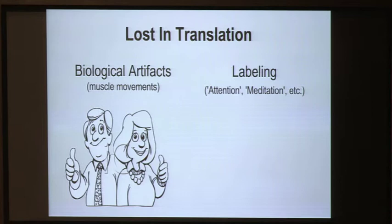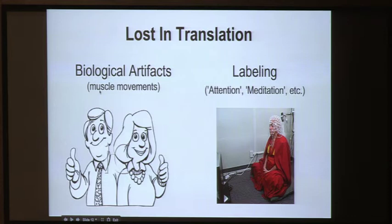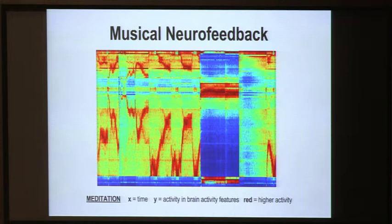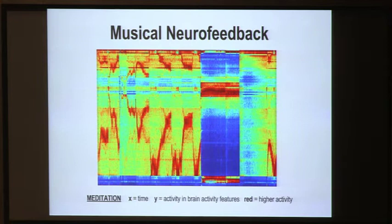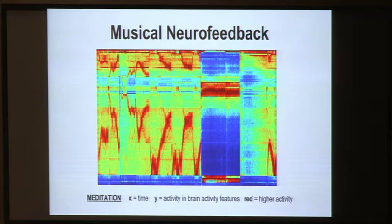Musical neurofeedback is a great use for this technology. Here you can see how the music reacts to what you're doing — this is a very experienced meditator. The x-axis represents time and each line on the y-axis represents a different brain activity feature. You can clearly tell when the person is meditating or going into deep trance: the red lines, meaning higher activity, are almost gone but very concentrated in one place, showing this person can control this to some extent more than most people.